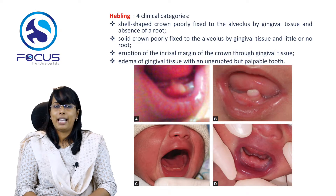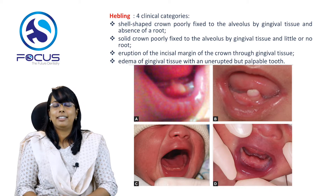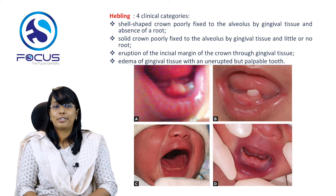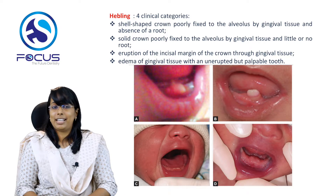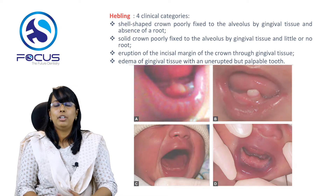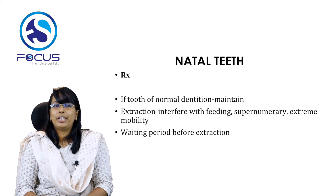Hedbling classified natal teeth into four clinical categories. Type 1 is a shell-shaped crown poorly fixed to the alveolus by gingival tissue with absence of root. Type 2 is a solid crown poorly fixed to the alveolus with little or no root. Type 3 shows eruption of the incisal margin of the crown through the gingival tissue. Type 4 is edema of the gingival tissue with an unerupted but palpable tooth.